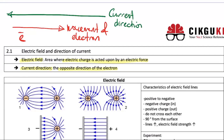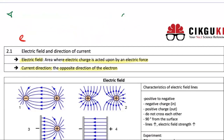Always remember: current direction is the opposite of the movement of the electron. In your exam Paper 2, they might ask you what is the meaning of electric field — electric charge acted upon by electrical force — and what is current direction — it is the opposite of the electron. These are the two things you need to know.